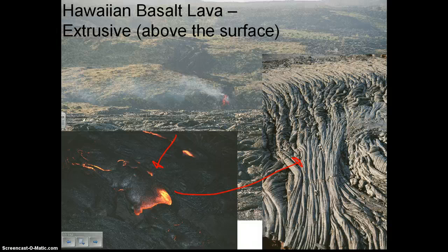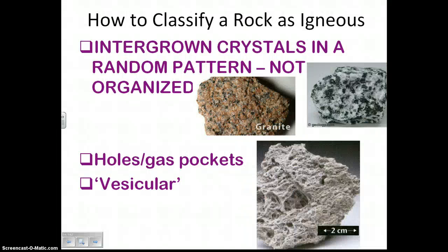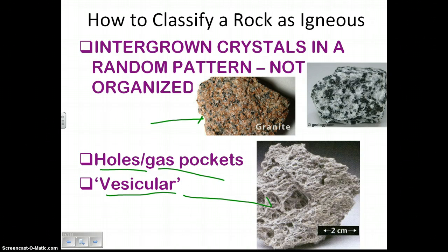This particular type of basalt — see those ropes? It looks very ropey. In Hawaiian, they refer to this as pahoehoe, believe it or not. So how do you classify a rock as igneous? Very simple. If you see intergrown crystals, kind of random crystals, they're not aligned in any specific way, not arranged in lines or bands or layers, then this is an igneous rock. The second way to know is if you see what we refer to as a vesicular rock, which means it contains holes or gas pockets like this piece of pumice. Pumice has so many gas pockets and is so not dense that it actually floats in water.